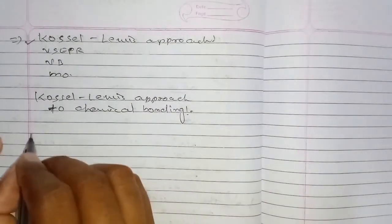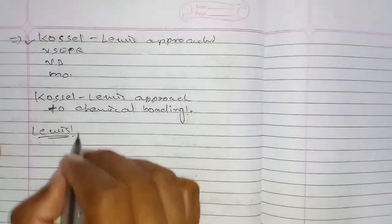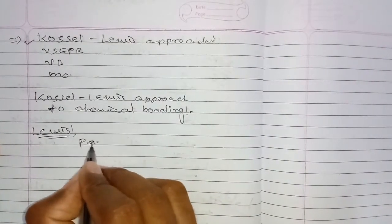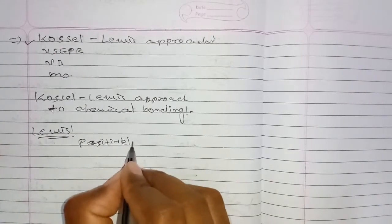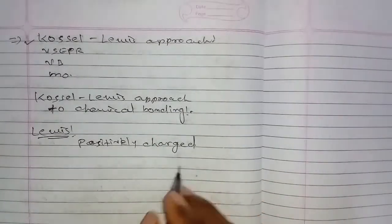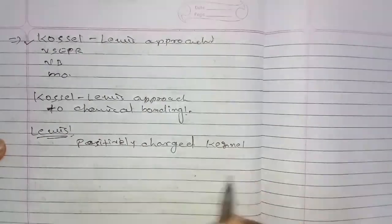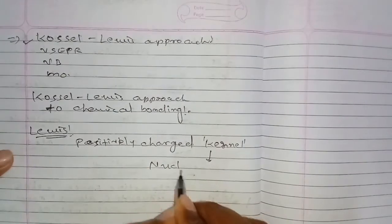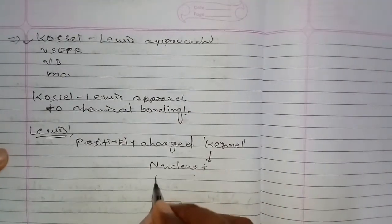According to Lewis, atoms are described in terms of a positively charged kernel — where the kernel means the nucleus and the inner electrons — and the outermost electrons surrounding it.